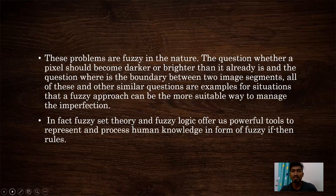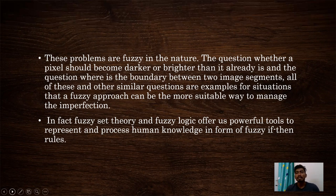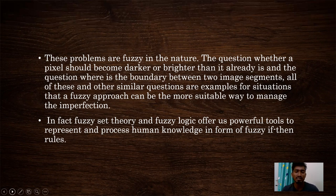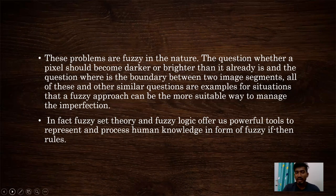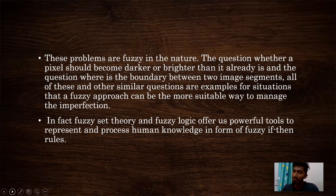The output of lower-level processes provides vague, conflicting, and enormous inputs to higher-level algorithms. These problems are fuzzy in nature. The question is whether a pixel should become darker or brighter than it already is, and where is the boundary between two image segments? All of these and other similar questions are examples of situations where a fuzzy approach can be a more suitable way to manage imperfection. Fuzzy set theory and fuzzy logic offer us powerful tools to represent and process human knowledge in the form of fuzzy if-then rules.